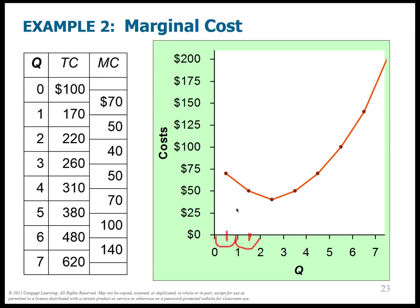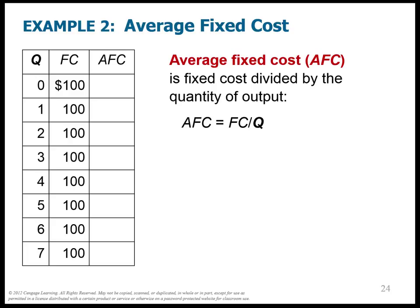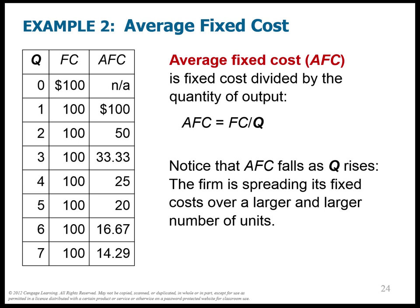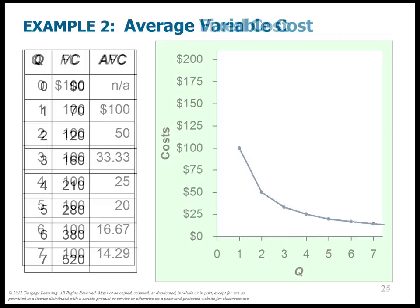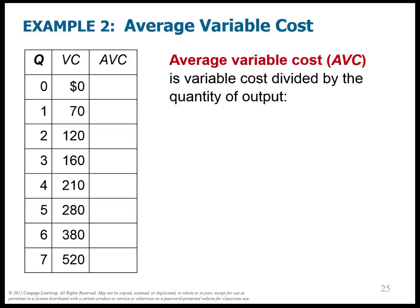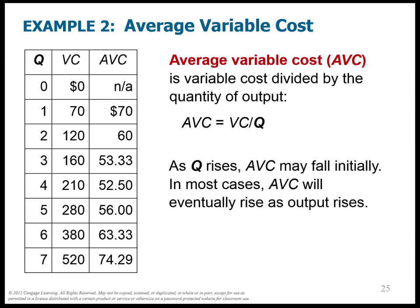Average fixed cost: the fixed cost is always 100, but we divide it by the number of units of output. It's like the total fixed cost spread out among all of my quantity. Average fixed cost falls because the cost is being spread over a larger number of units. Average variable cost is the variable cost divided by the quantity of output. The average variable cost may fall initially, but then it rises as output rises, giving you a U-shaped curve for average variable cost.